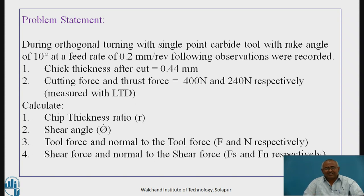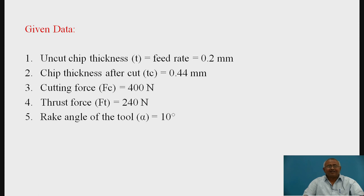The following observations were recorded: chip thickness after cut is 0.44 mm; cutting force Fc and thrust force Ft are measured by a plate tool dynamometer as 400 N and 240 N respectively. We are required to calculate the chip thickness ratio R, shear angle phi, tool force F and normal to the tool force N, and shear force Fs and normal to the shear force Fn. The given data are: uncut chip thickness equals feed rate (0.2 mm), chip thickness after cut Tc = 0.44 mm, cutting force Fc = 400 N, thrust force Ft = 240 N, and rake angle alpha = 10 degrees.